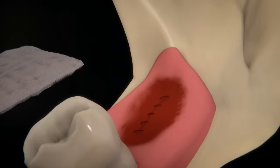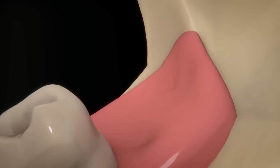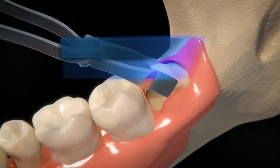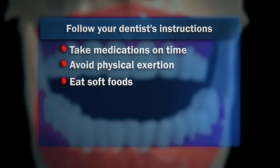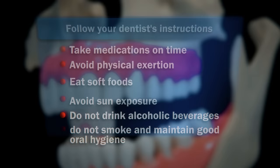In some cases, the dentist will only place a gauze in the extraction area for about 25 minutes so that the bleeding area can clot and heal faster. Wisdom tooth extraction is an outpatient procedure. However, it is very important to strictly follow your dentist's instructions: take medications on time, avoid physical exertion, eat soft foods, avoid sun exposure, do not drink alcoholic beverages, do not smoke, and maintain good oral hygiene. In case of swelling, the patient can apply ice to the cheek outside the surgery site. But if the discomfort or swelling persists, it is recommended to contact your dentist.